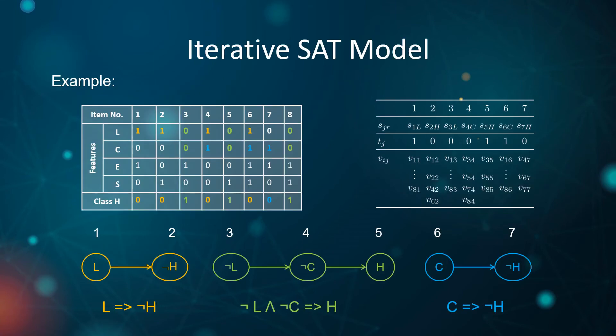Let's look at an example. There are eight items, four features, and one class. A valid decision set for this data for class H would be: if L is true, then class H is false; if L is false and C is false, then class H is true; if C is true, then class H is false. In order to be easy for humans to understand, this rule must be concise. We use a better measure compared to earlier work, namely the total size of the decision set in terms of literals, so we are not driven to a small set of rules which require a large number of literals. In this case, the size of the decision set is 7.